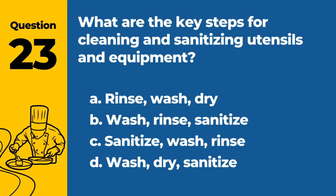Question 23. What are the key steps for cleaning and sanitizing utensils and equipment? a. Rinse, wash, dry. b. Wash, rinse, sanitize. c. Sanitize, wash, rinse. d. Wash, dry, sanitize. Answer: b. Wash, rinse, sanitize. This sequence ensures that utensils and equipment are properly cleaned and free from harmful bacteria.